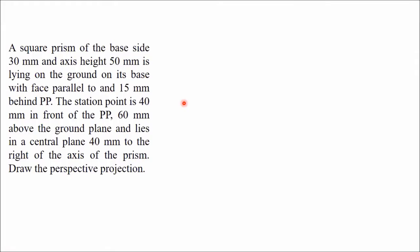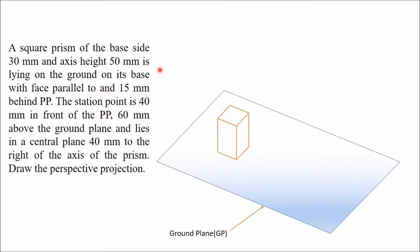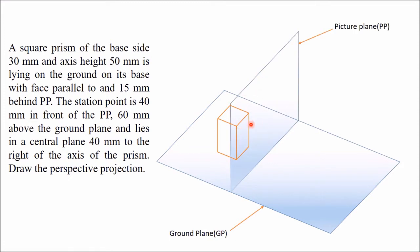In this video we will draw a single-point perspective view of a square prism with a base side of 30mm and axis height of 50mm. The prism is lying on the ground on its base, with one face parallel to and 15mm behind the picture plane. This distance between the parallel face and the picture plane is 15mm.